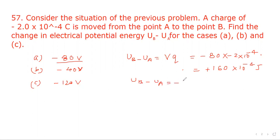And the third case UB minus UA will be equal to minus 120 into minus 2 into 10 to the power minus 4.